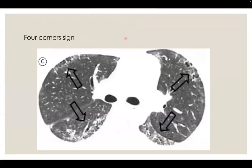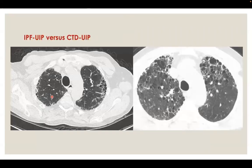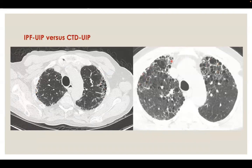Another feature suggesting secondary UIP due to connective tissue disease is the four-corner sign. Here, the honeycombing and fibrosis occupy the anterior portion of the upper lobes and the superior segments of the lower lobes — this is called the four-corner sign. This sign suggests secondary UIP because in IPF UIP, honeycombing is seen along the lateral costal margins, but in the anterior upper lobe sign and four-corner sign, honeycombing is seen anteriorly and not along the costal margin.